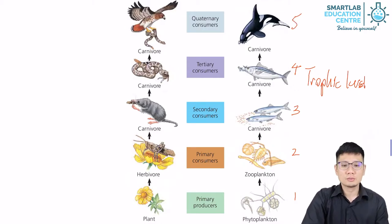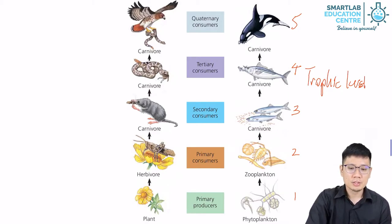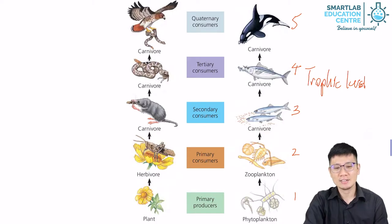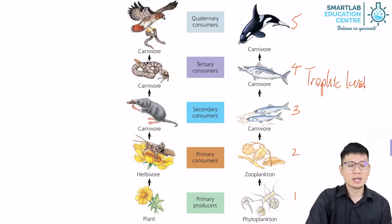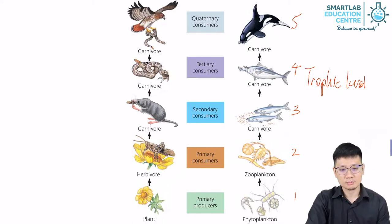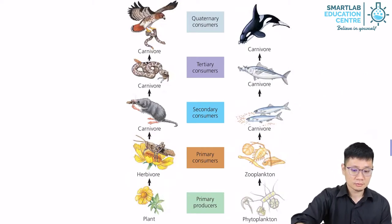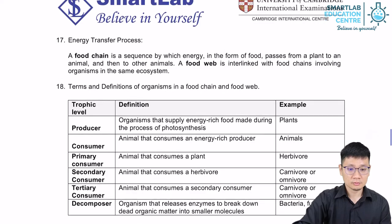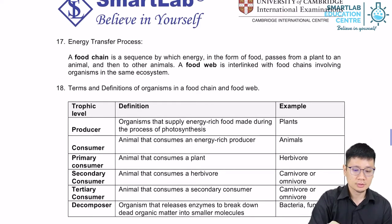There's a general rule to this. As a rule of thumb, a food chain rarely exceeds five trophic levels. In fact, five trophic levels are not always found in every single ecosystem.